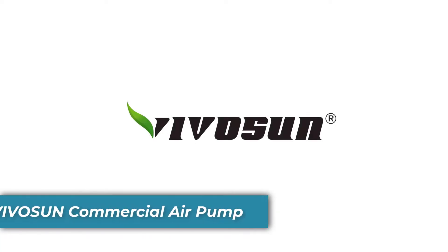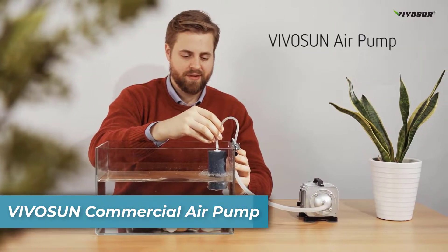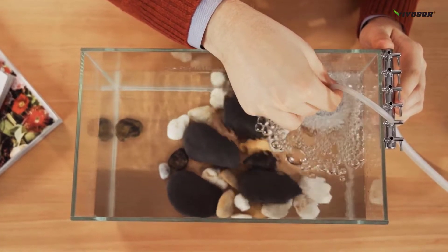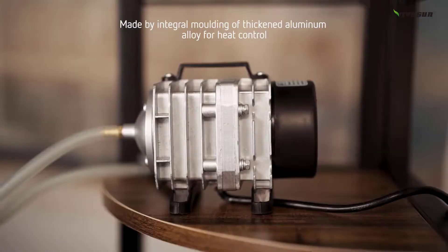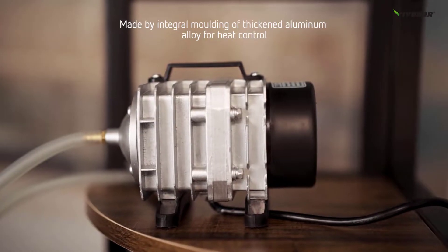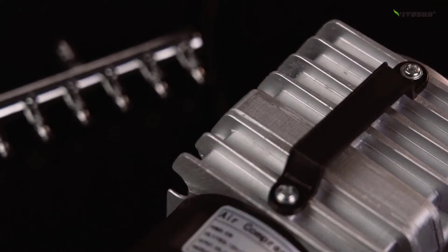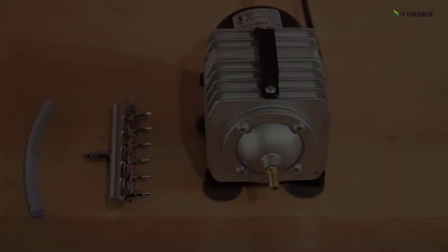Number three is Vivison Commercial Air Pump. This commercial air pump from Vivison is the perfect choice for larger, professional-grade applications. The 50-watt electromagnetic motor delivers exceptional air pressure, ensuring your large tanks are properly aerated and oxygenated with up to 1,110 gph of airflow.